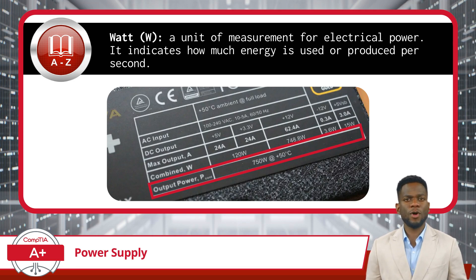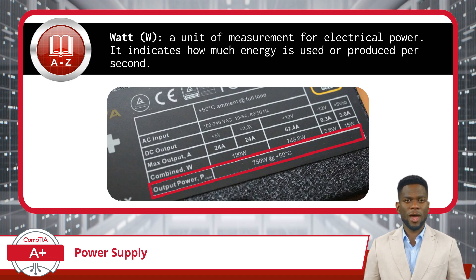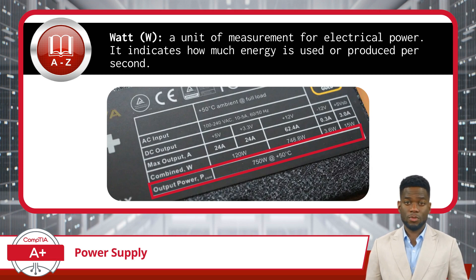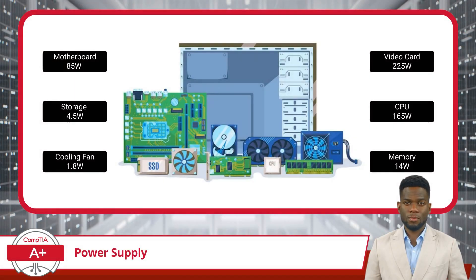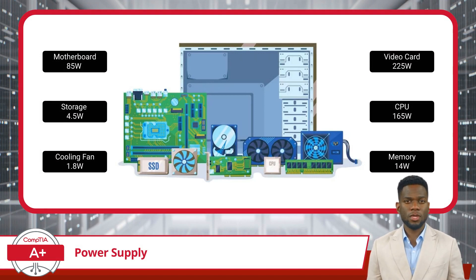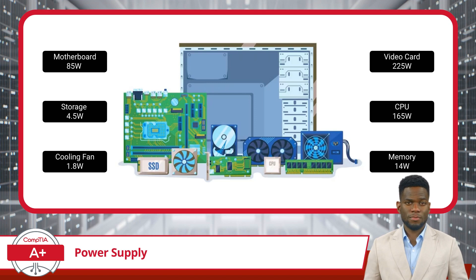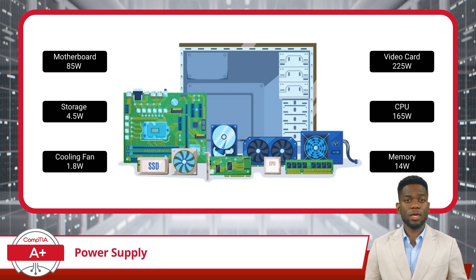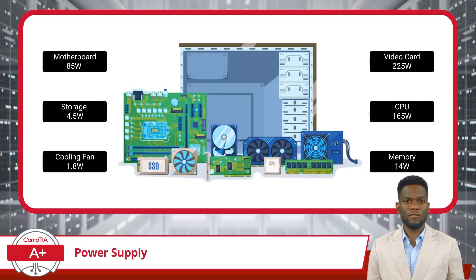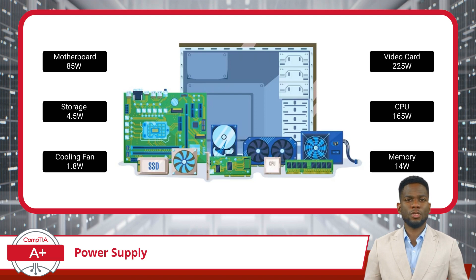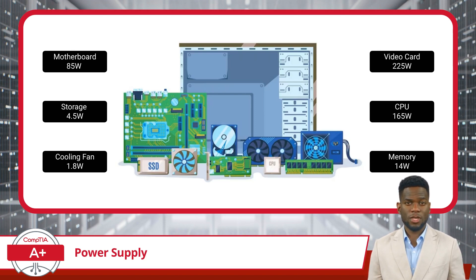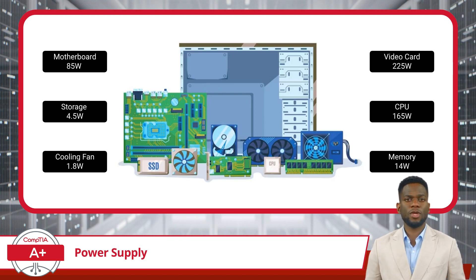Components such as the CPU, graphics card, storage drives, and peripherals all draw power from the PSU to operate. Therefore, it's essential to choose a PSU with an adequate wattage rating to meet the power demands of these components. When determining the appropriate wattage for a build, consider the power requirements of each component individually and calculate the total power consumption, taking into account the type and number of components, their power draw under load, and any potential future upgrades. Selecting a PSU with insufficient wattage can result in system instability, unexpected shutdowns, or even damage to components. Conversely, choosing a PSU with excessive wattage may lead to unnecessary expenses and inefficiencies, as the system will only draw the power it requires.